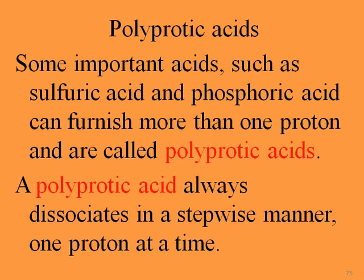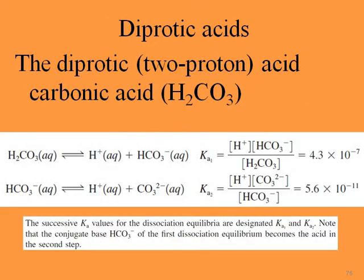A polyprotic acid always dissociates in a stepwise manner, one proton at a time. If you have two protons to lose, we call it a diprotic acid. Diprotic acids have two protons — such as carbonic acid, H₂CO₃ — so we have two steps for dissociation. The first step is H₂CO₃ giving us a proton plus HCO₃⁻, with KA1.